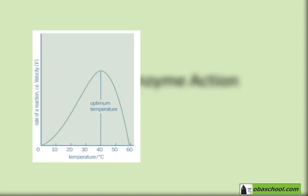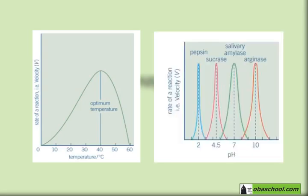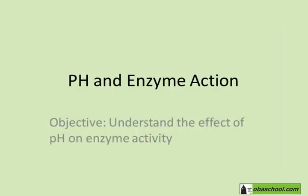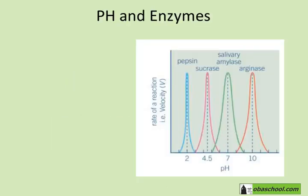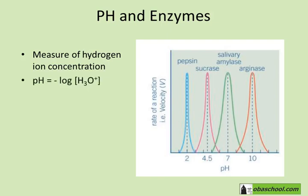Temperature is not the only variable that affects enzyme action. There is also pH. The objective of this video is to understand how pH affects the activity of enzymes. pH is a measure of hydrogen ion concentration, and the formula used to determine the pH is: pH equals minus log of the concentration of H3O+. It is the negative logarithm of the hydrogen ion concentration.